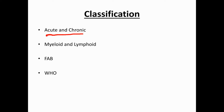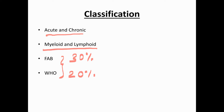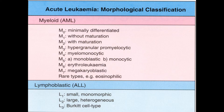We classify leukemia as acute versus chronic and myeloid versus lymphoid. Two committees classify leukemia: FAB (French-American-British) and WHO. According to FAB, based on morphology, blast cells should be more than 30%. According to WHO, based on cytogenetics, molecular, and morphological features, blasts should be more than 20% to call it acute leukemia.